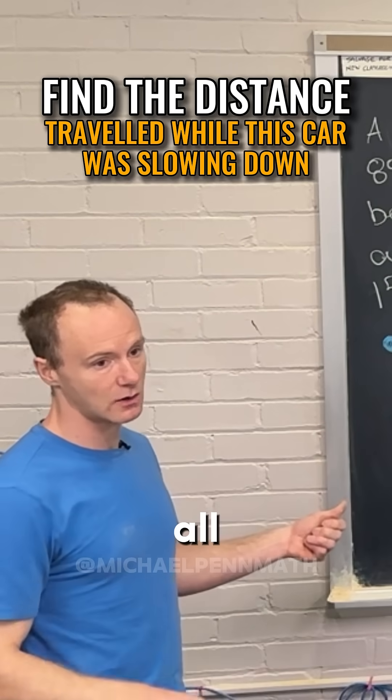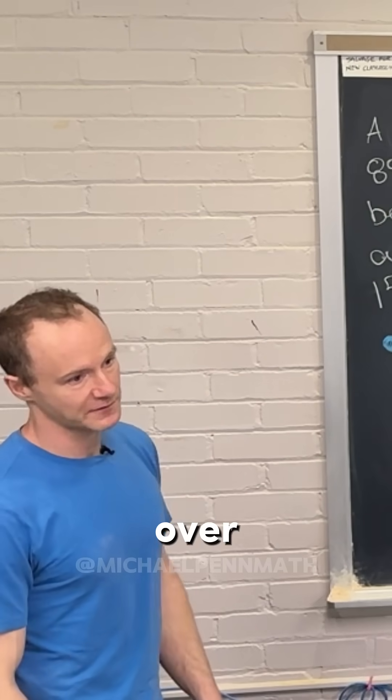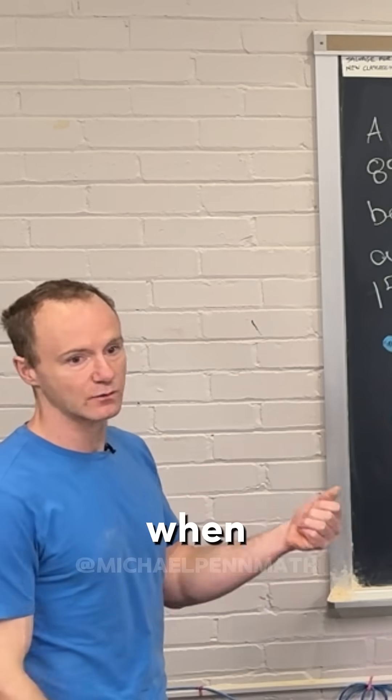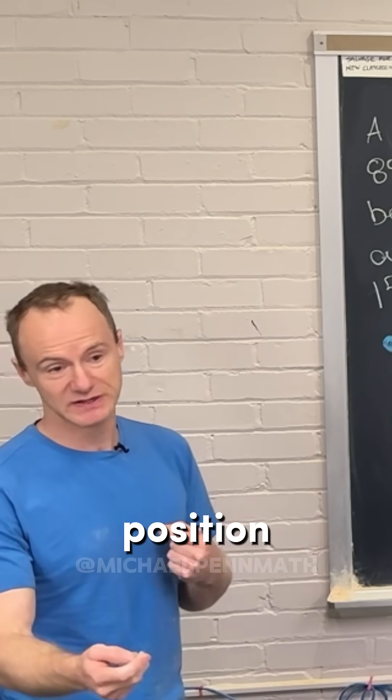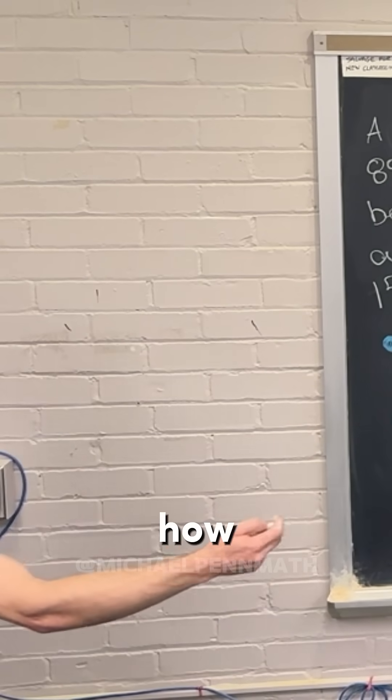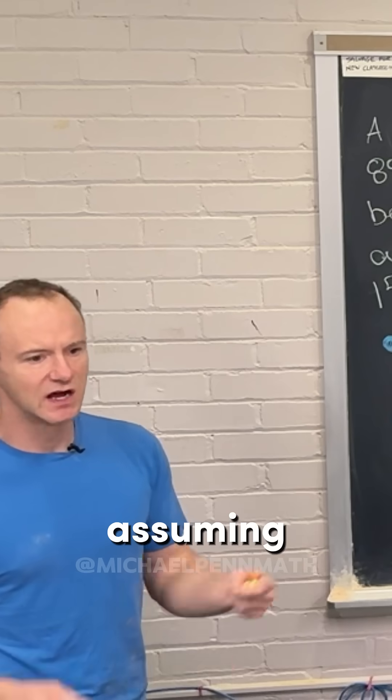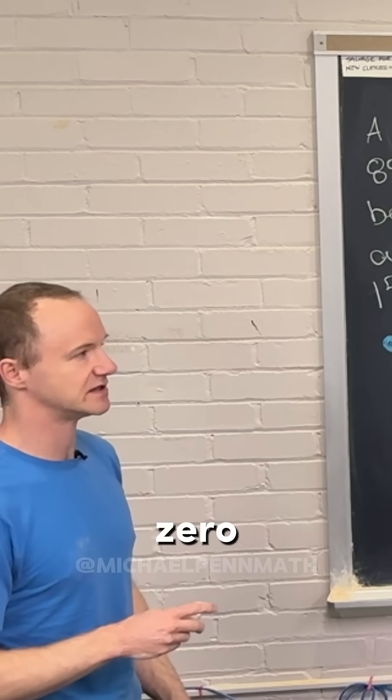The time it takes to slow all the way down is 88 over 15, right? So if we plug in when it stopped, that tells you the position where it stopped, which tells you how far you are from where you started, assuming that the initial position is zero.